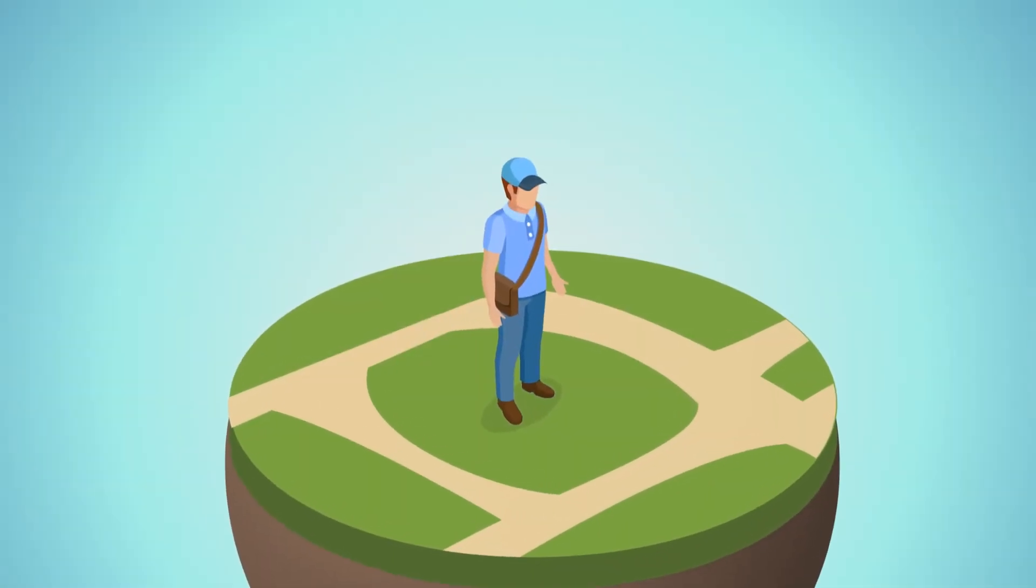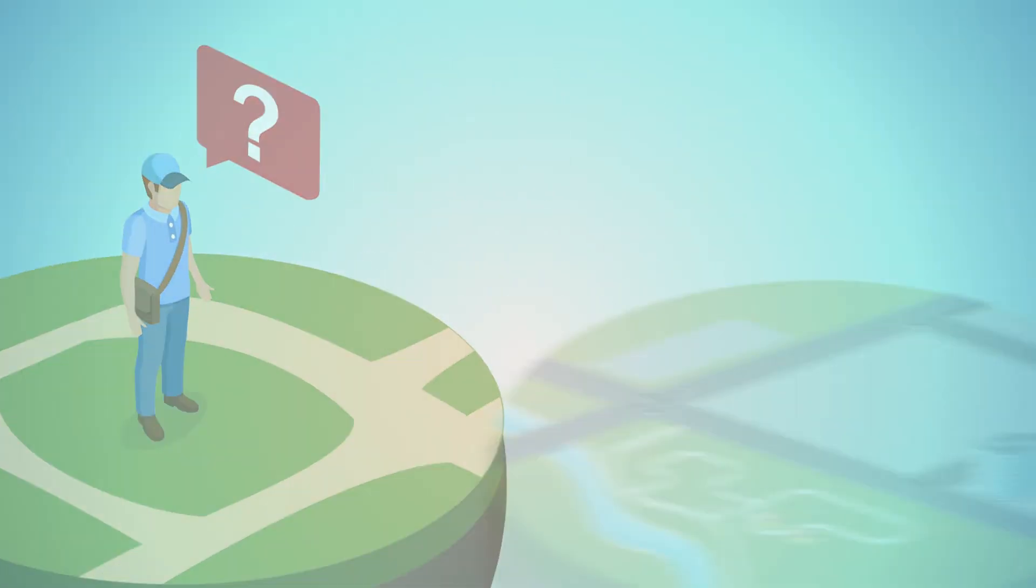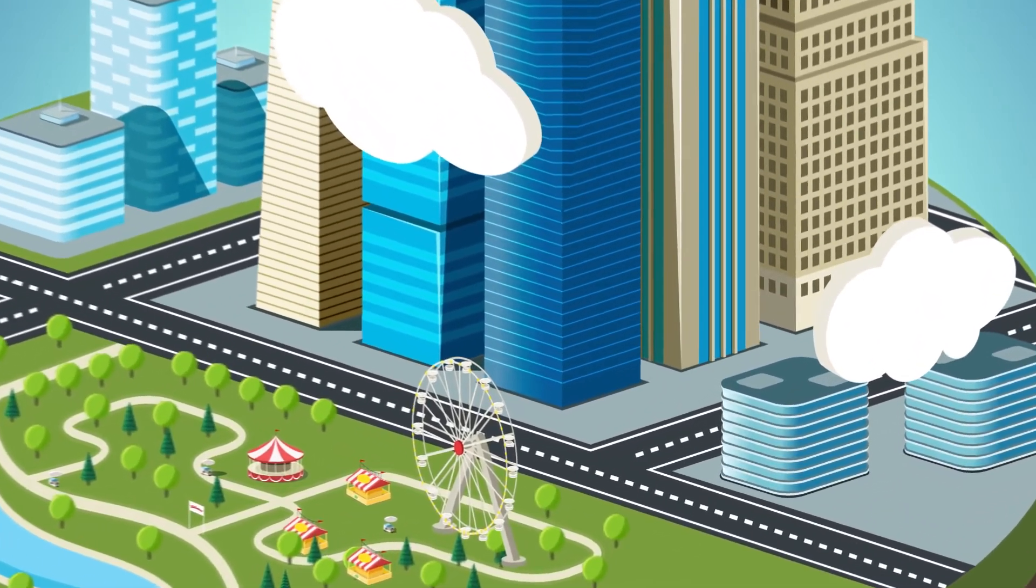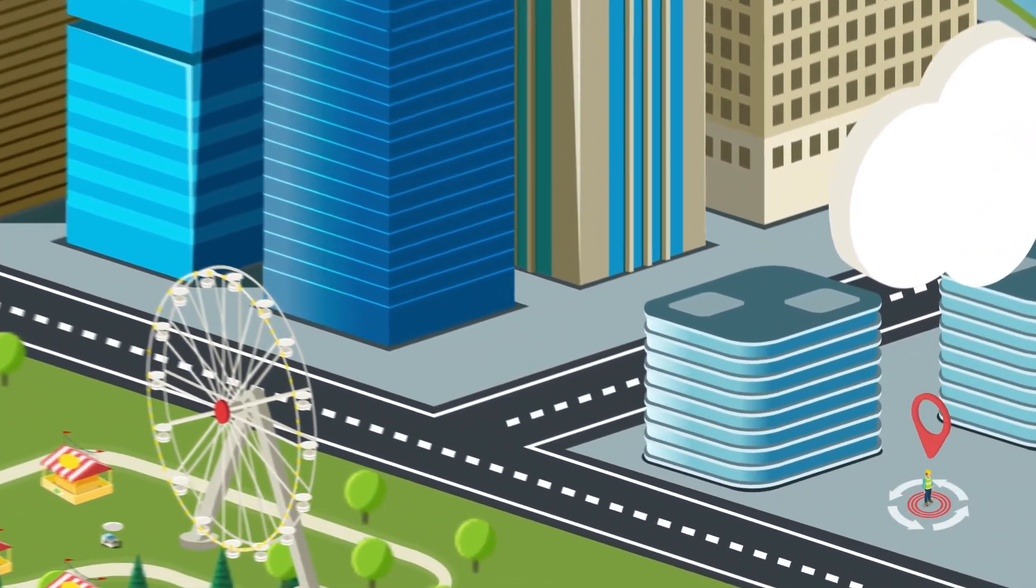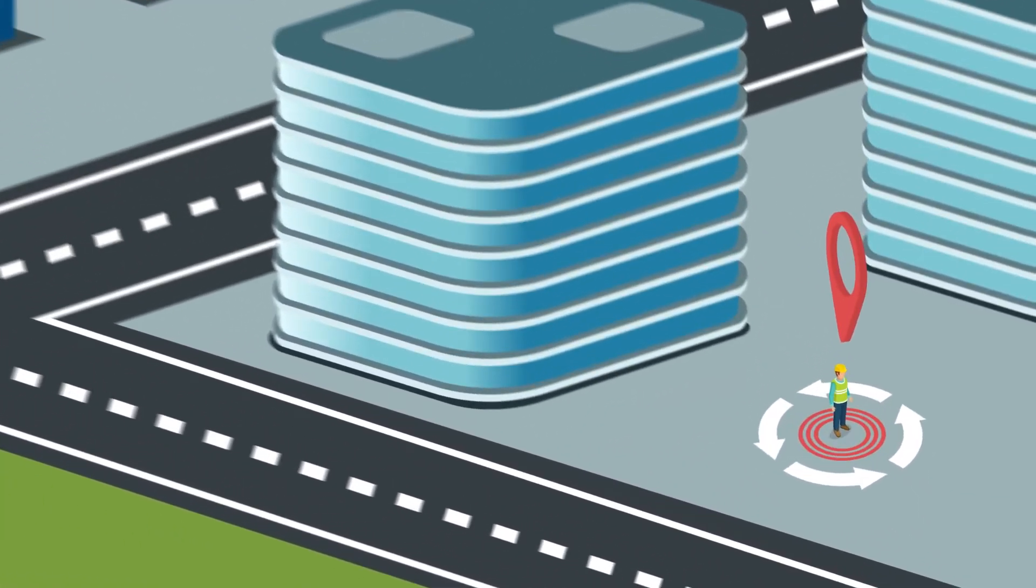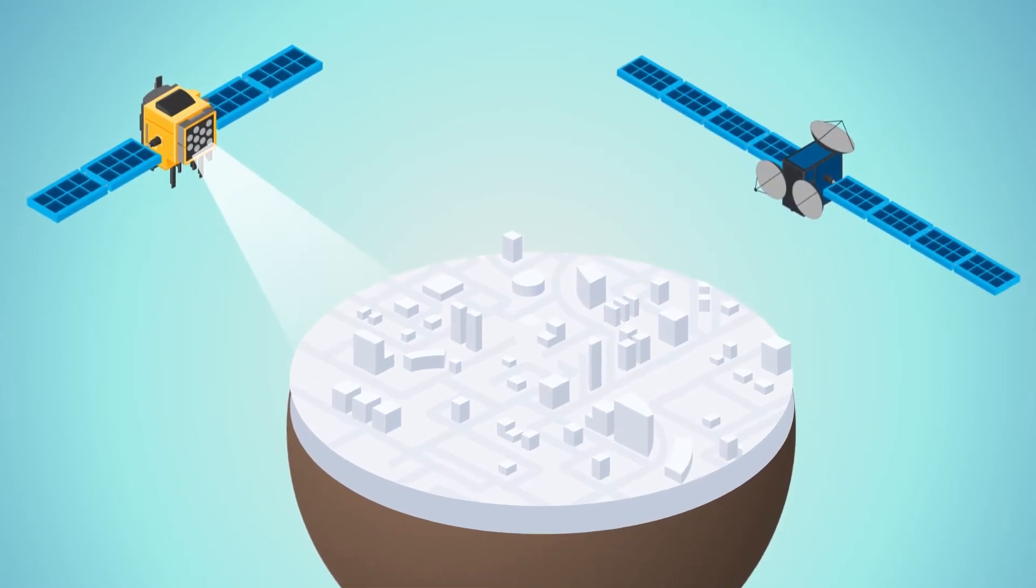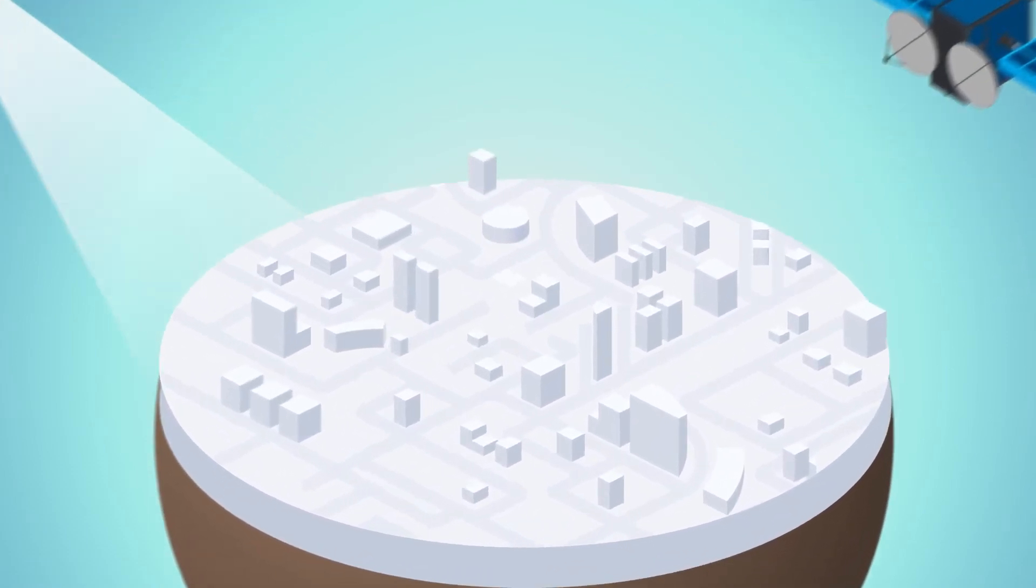Now for the second question. Where am I? We rely on GNSS for thousands of applications, and for many of these it's paramount for the location to be really precise and reliable. GALILEO and EGNOS make navigation more accurate and reliable,